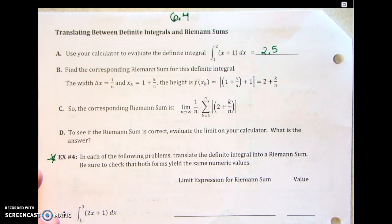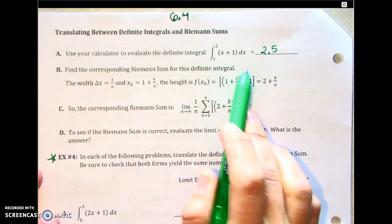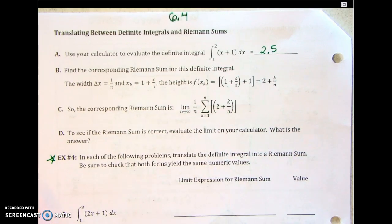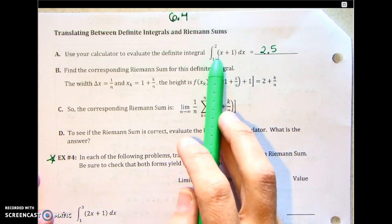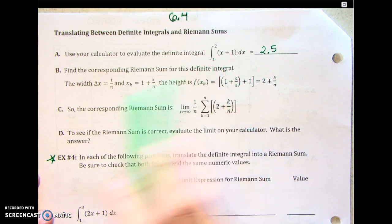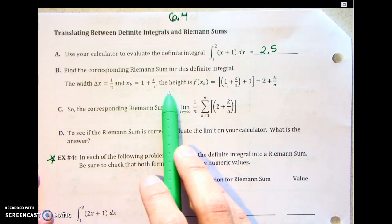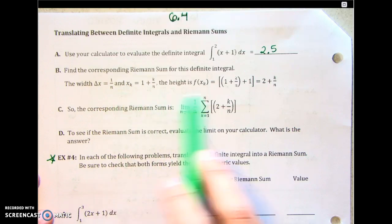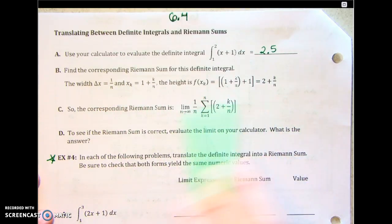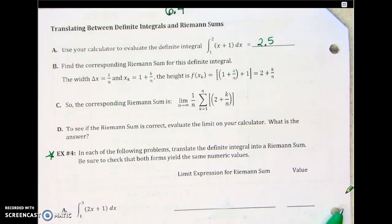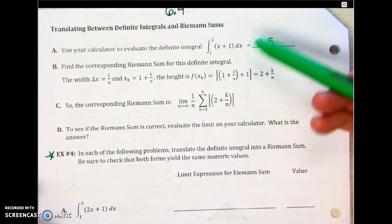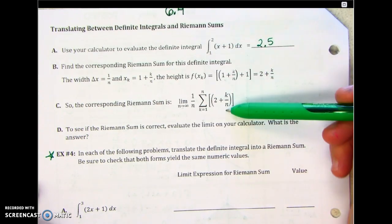Find the corresponding Riemann sum for this definite integral. This is what this page is all about. These are just answers, but I need to show you how to find them — the corresponding Riemann sum. So what we're going to do is change a definite integral into a Riemann sum.